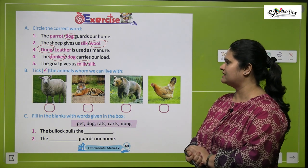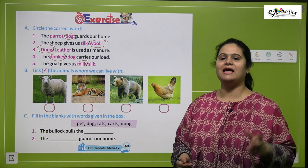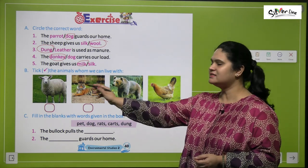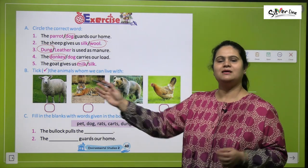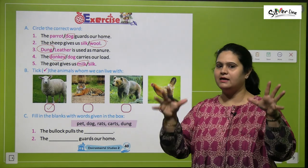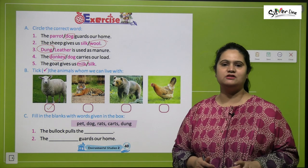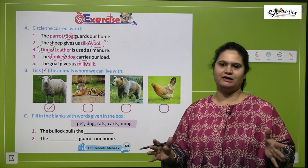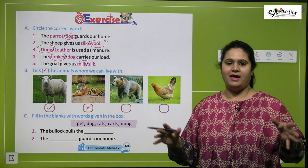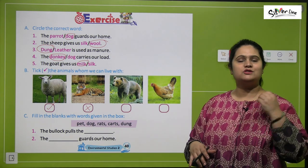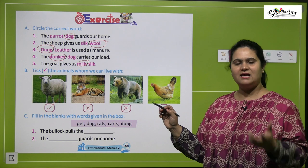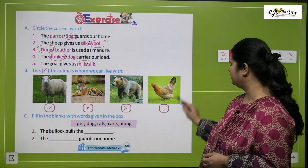Part B: pick the animals we can live with. A sheep — yes, they are domestic animals, you can easily live with them. A tiger — no, it is a very dangerous and ferocious animal that lives in forests. A bear — no, it is also a very dangerous animal we cannot live with. A hen — yes, hens can be lived with.